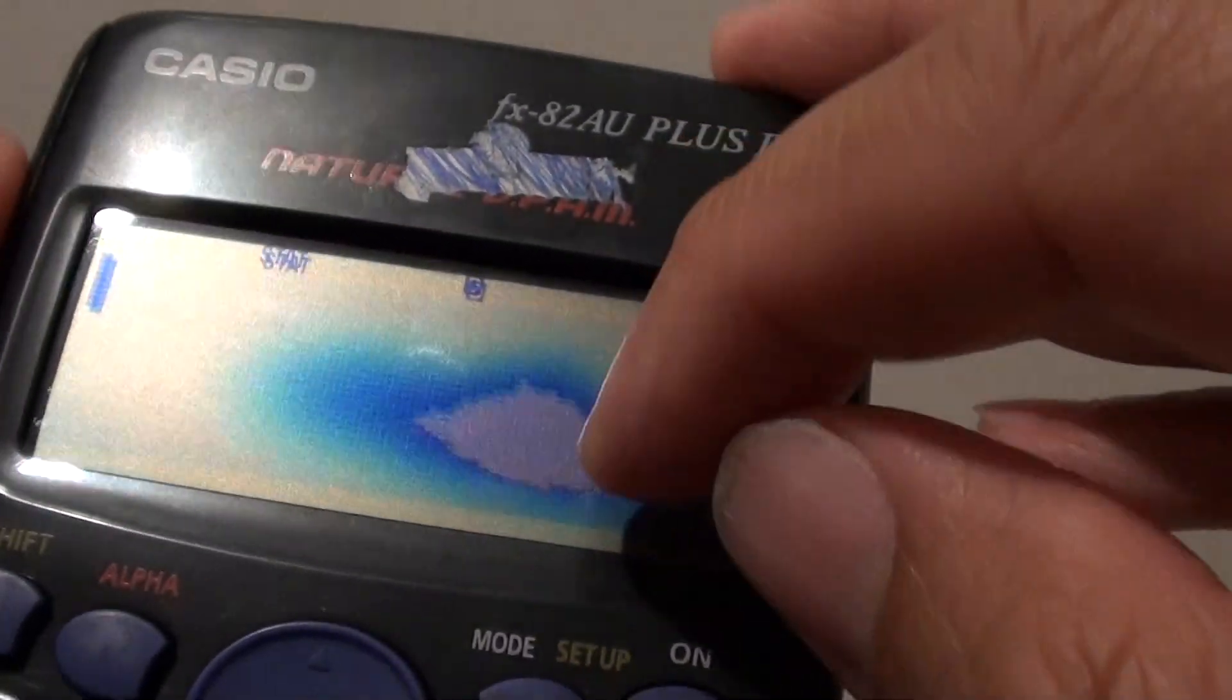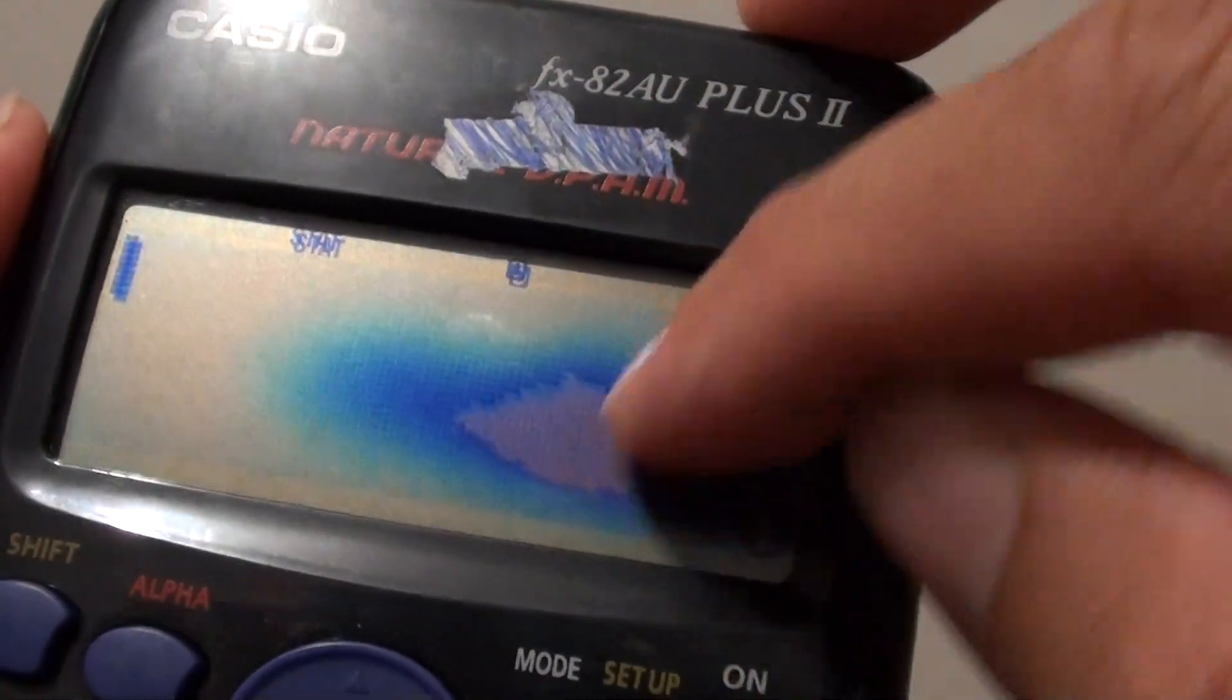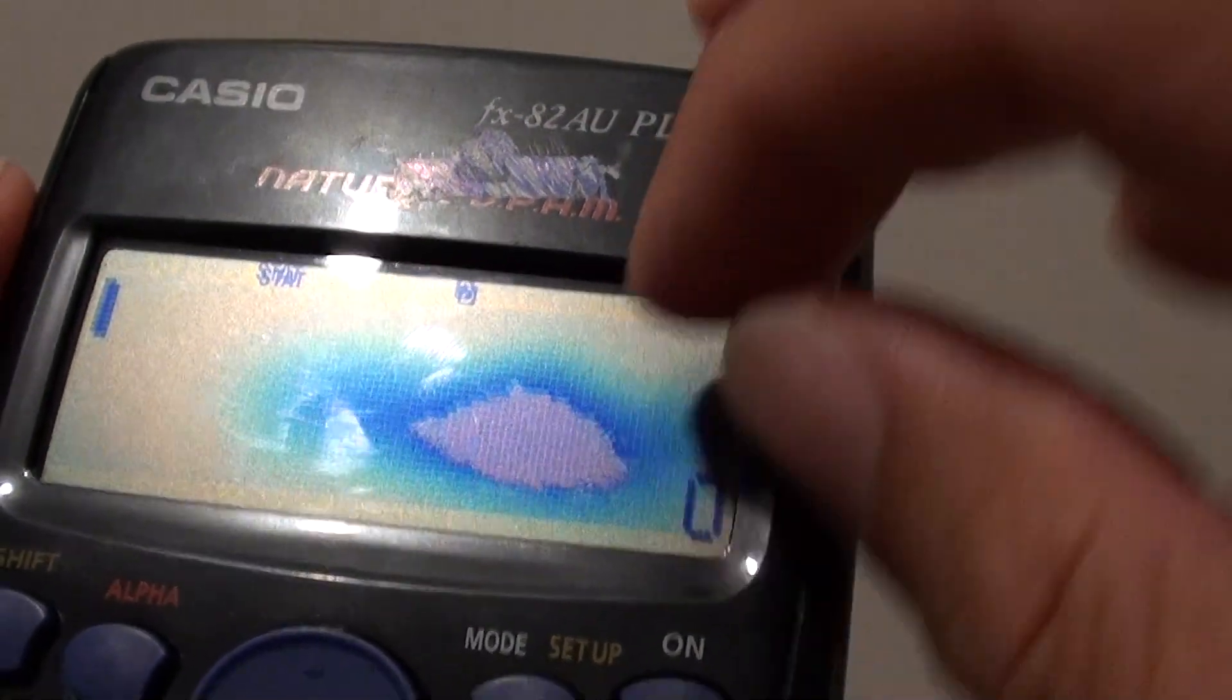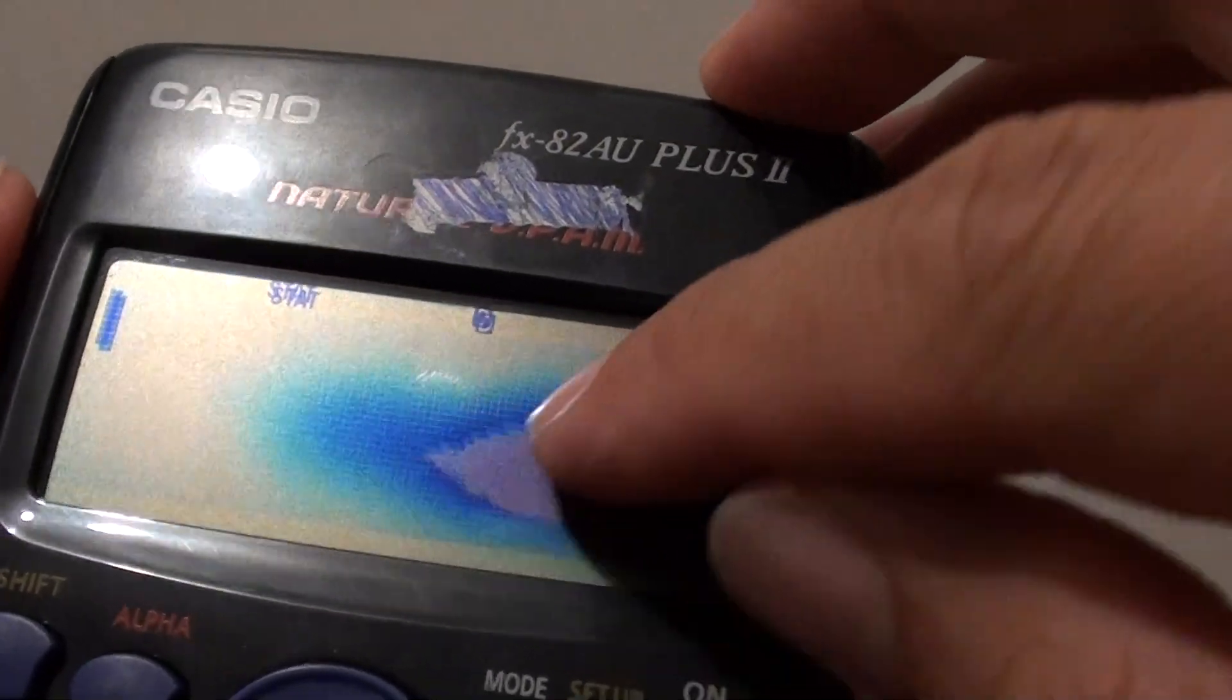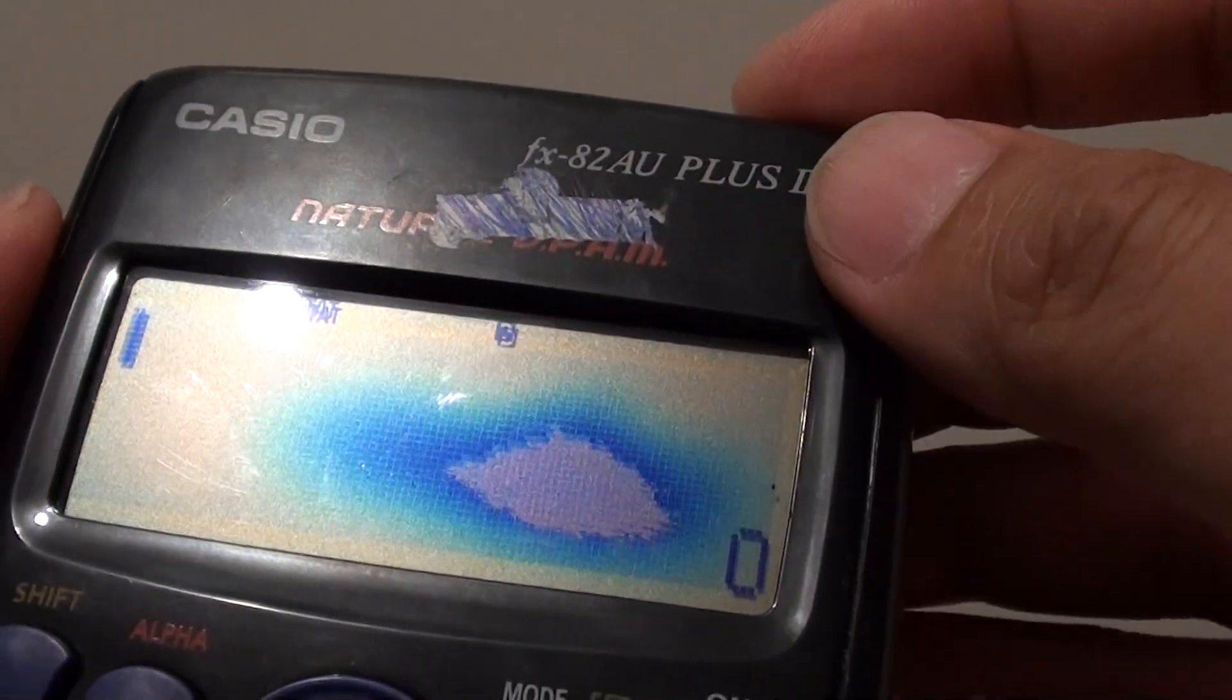So if you are getting this blue spot or black spot on the LCD, it is normally because a sharp object has fallen into the surface area of your calculator.